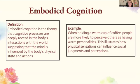Embodied cognition is the theory that cognitive processes are deeply rooted in the body's interactions with the world, suggesting that the mind is influenced by the body's physical state and actions. For example, when holding a warm cup of coffee, people are more likely to perceive others as having warm personalities. This illustrates how physical sensations can influence social judgments and perceptions.